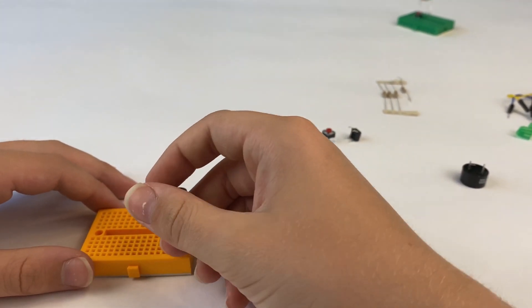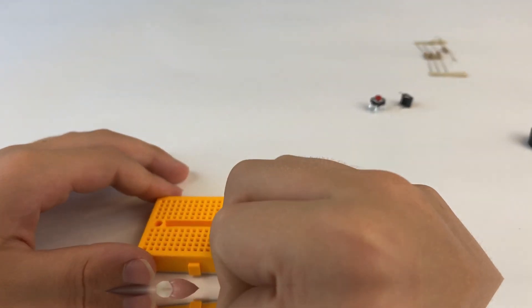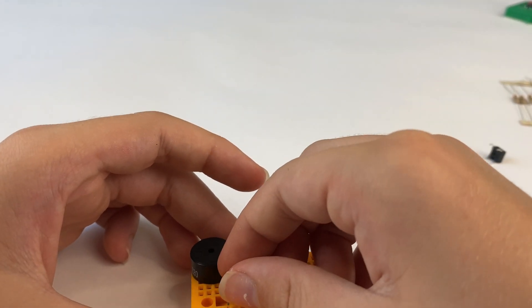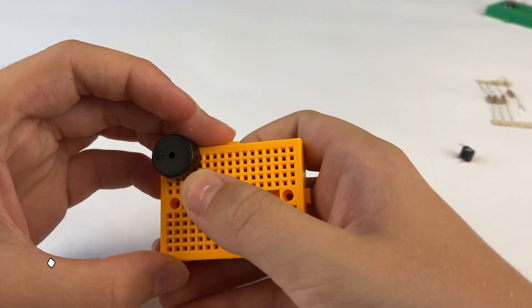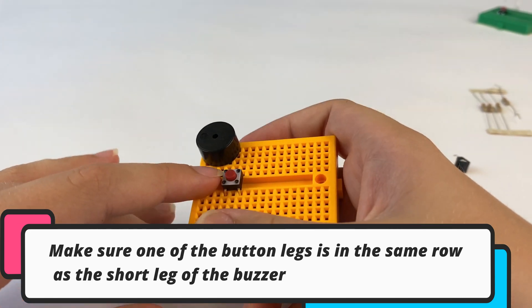We put it into the breadboard and then get a button. We can put it in the breadboard so that one of the button legs lines up with the short wire of the buzzer.